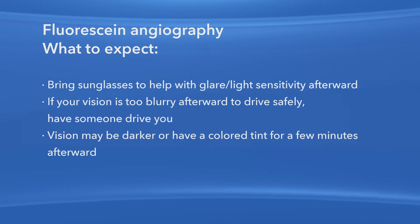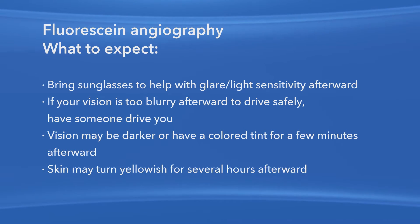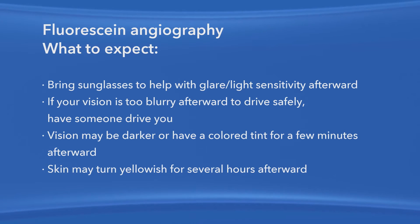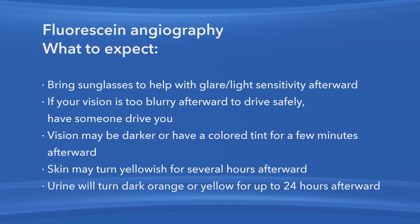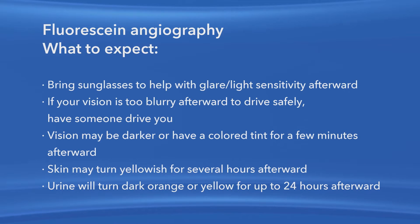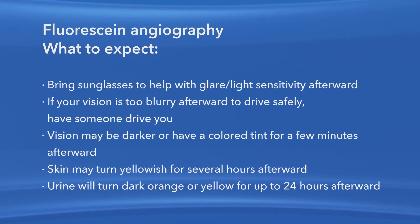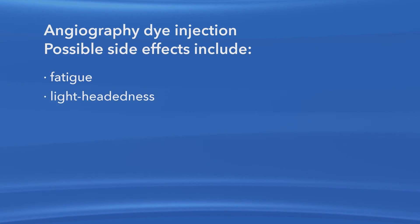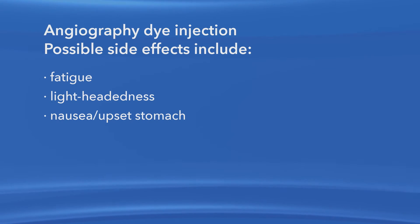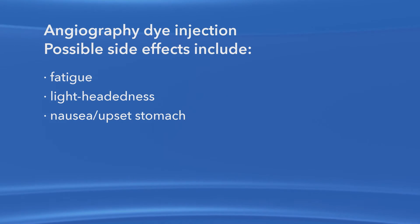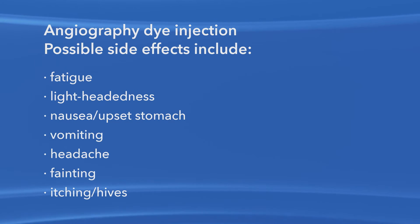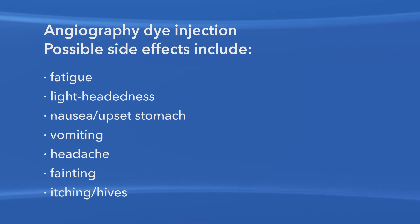After the fluorescein dye is injected, your skin may turn yellowish for several hours. Also, because your kidneys remove the dye from your body, your urine will turn dark orange or yellow for up to 24 hours following the test. Some people may feel tired, lightheaded, or nauseous after having the dye injected. Also possible are vomiting, headache, fainting, itching, or hives. Alert your ophthalmologist if you experience any of these side effects.